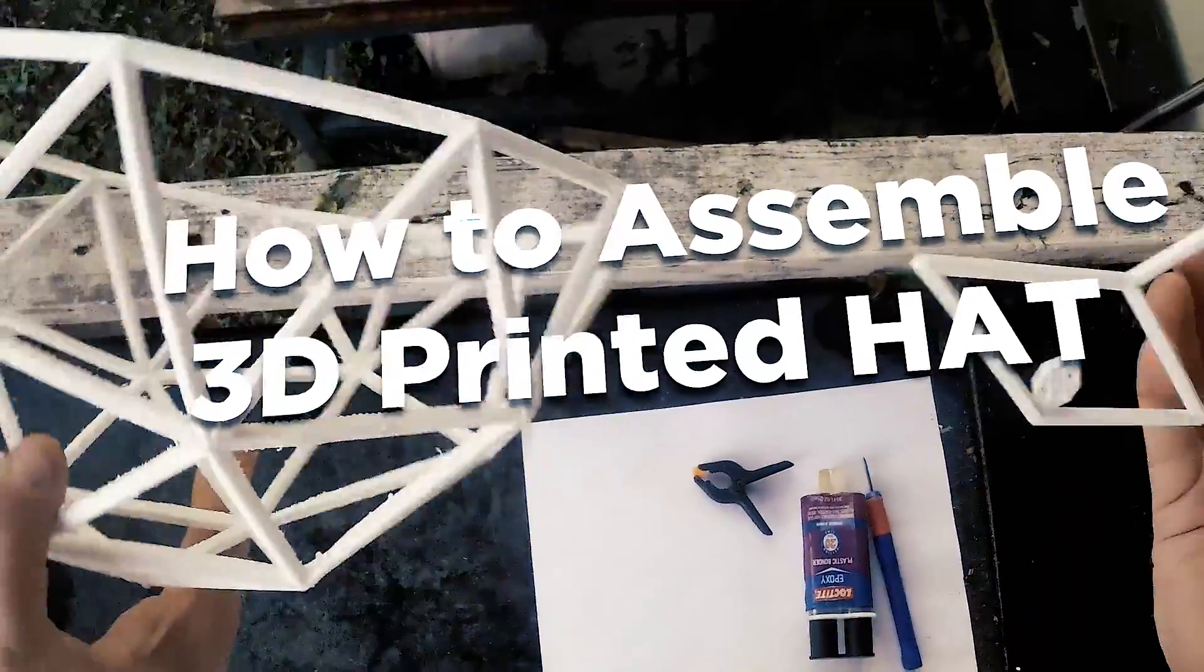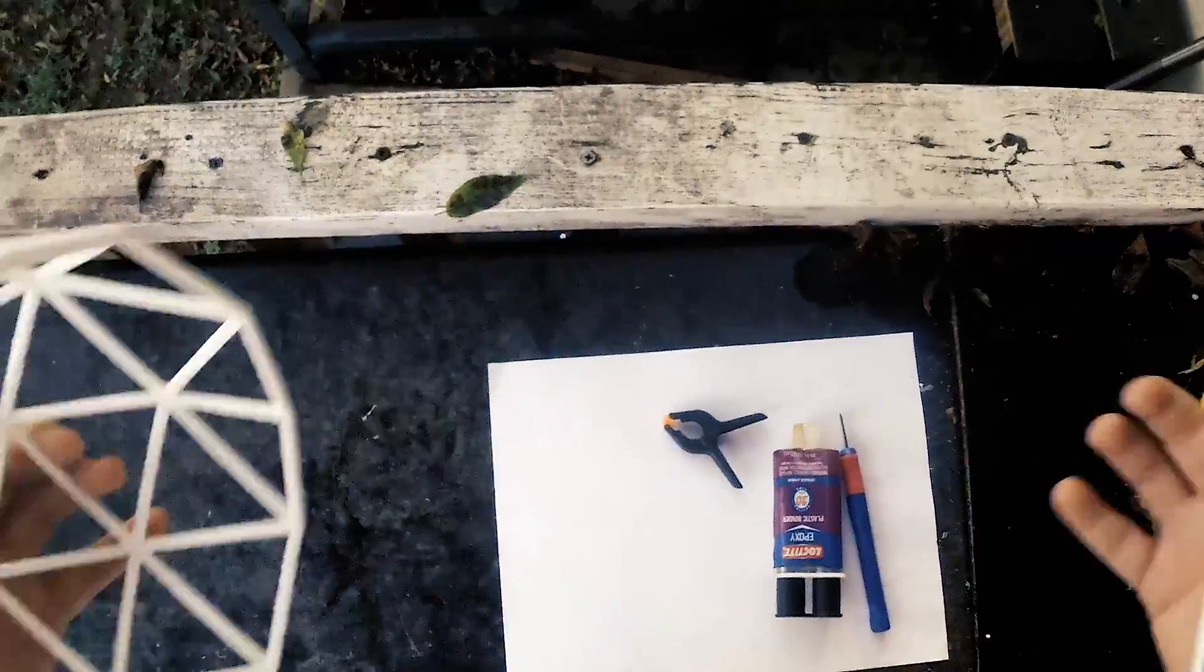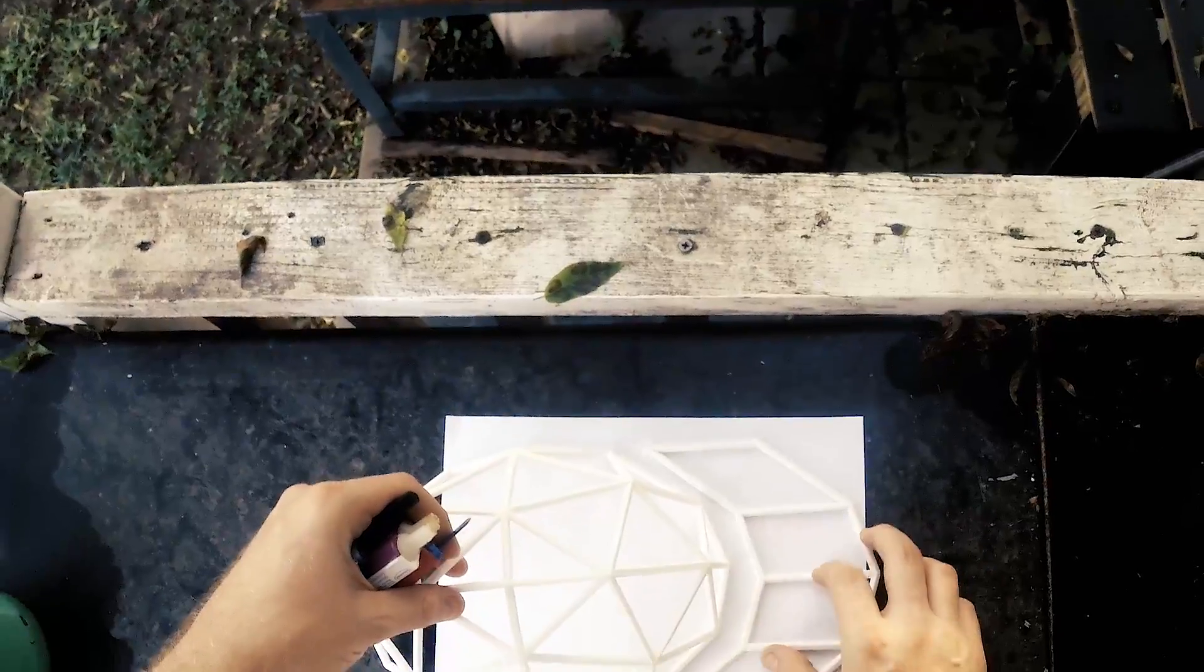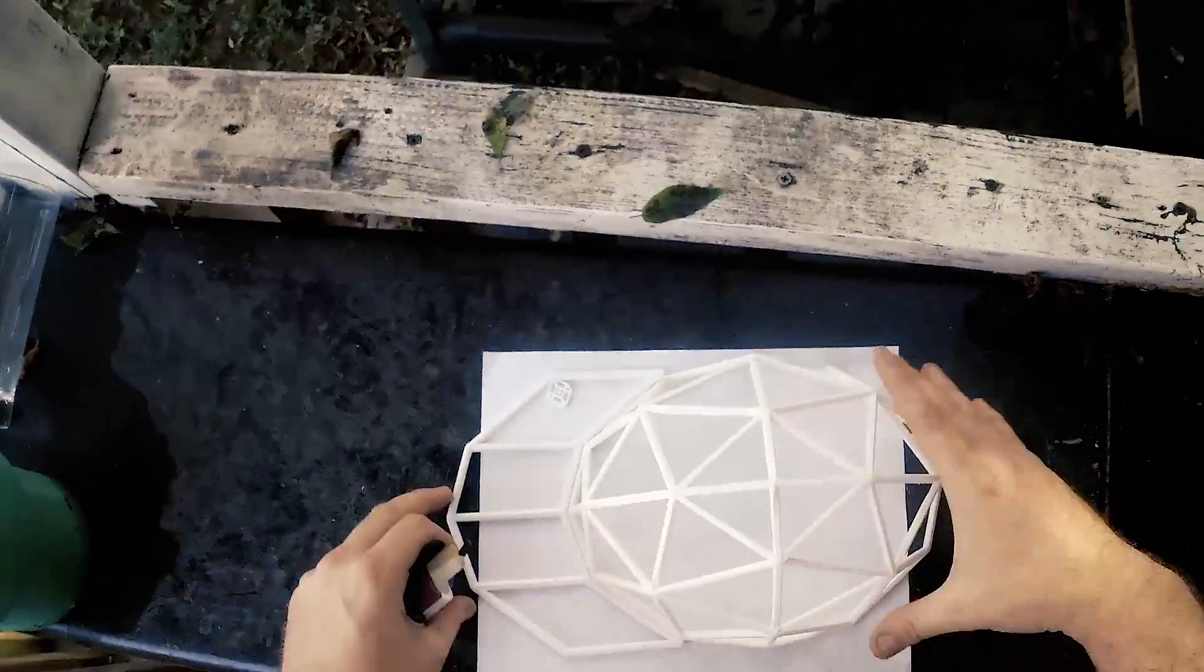Once you have your 3D printed parts, you can get a sheet of paper to use as your work surface. Then you can just lay them down right here, like that.